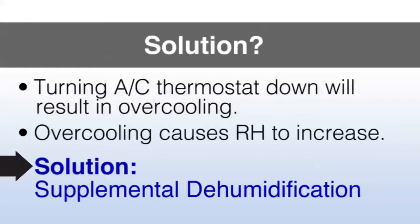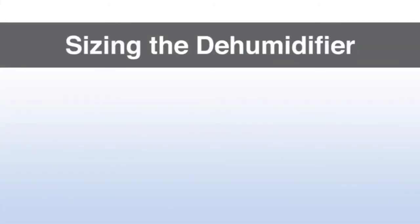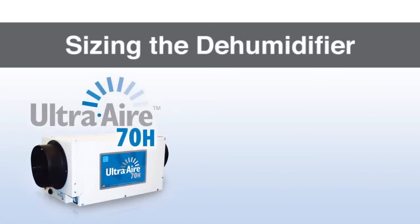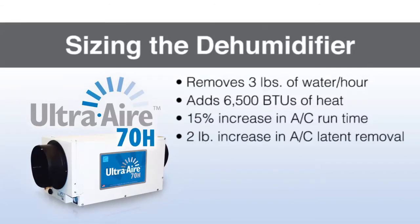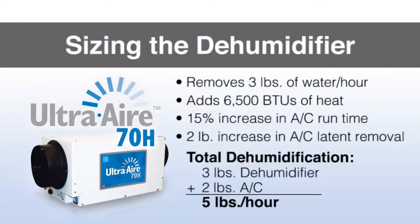The solution would be supplemental dehumidification as needed to remove the remaining 5 pounds per hour. For sizing the dehumidifier, we'd recommend using an Ultra-aire 70, which removes about 3 pounds of water per hour. It adds about 6,500 BTUs of heat to the home, which will increase the AC run time by 15%. Increasing the run time also increases the latent removal of the air conditioner. So adding a little heat, if it is still at the point of doing some cooling, will extend the AC's run time by enough to remove 2 pounds of moisture per hour. The total increase in dehumidification would be 3 pounds from the dehumidifier and 2 pounds from the air conditioner — about 5 pounds per hour — which is going to help significantly with the high moisture level in the home.